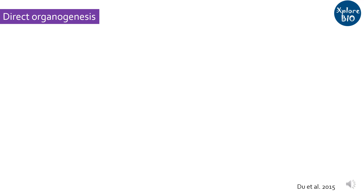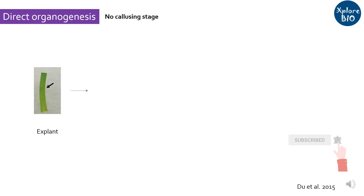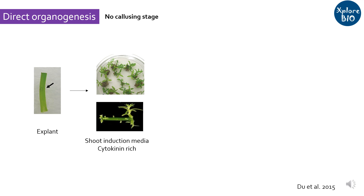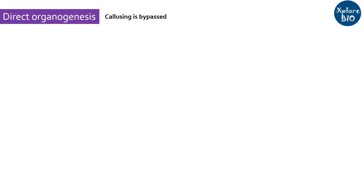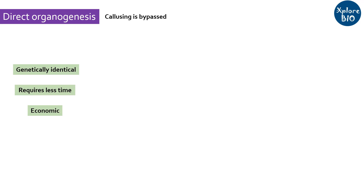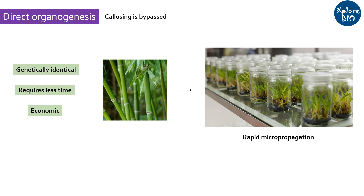In direct organogenesis, shoot or root are directly regenerated without undergoing callus formation. Suppose you take a shoot section as an explant — you keep it on shoot induction media having cytokinin to directly regenerate more shoots from it. Later, it can be shifted to root induction media containing auxin to undergo root formation. As the callus stage is bypassed, the plants regenerated using direct organogenesis are genetically identical to the source. Also, direct organogenesis is a comparatively faster and cheaper way to multiply plants, and hence is used for rapid micropropagation.